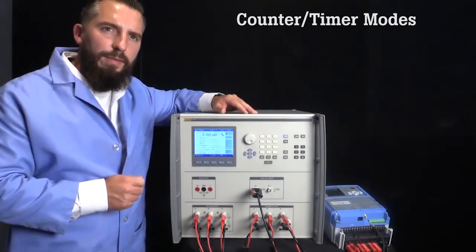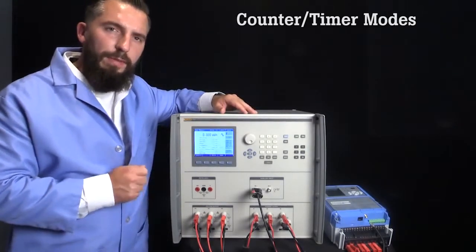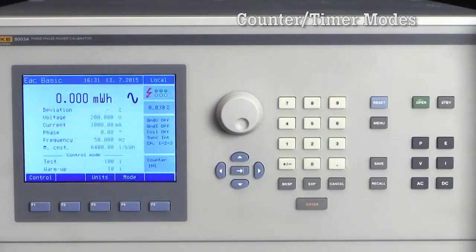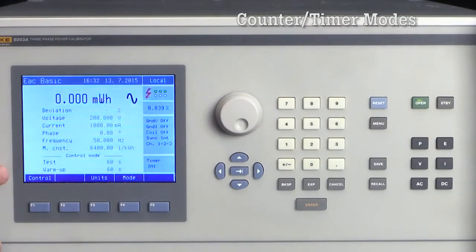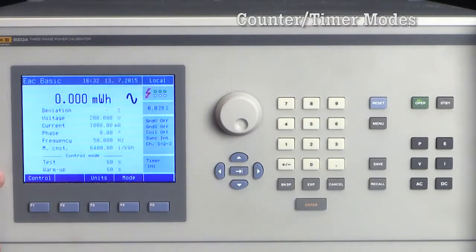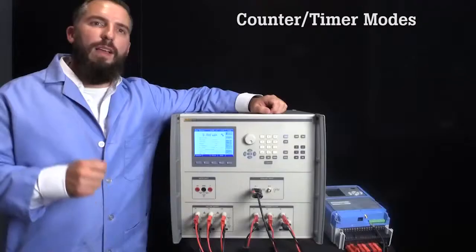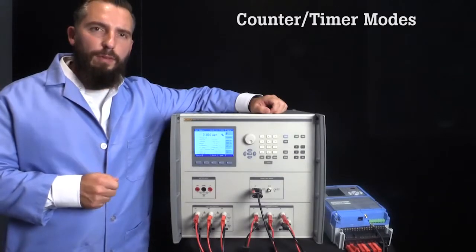To demonstrate, I've configured this test for 200 volts AC, 50 hertz, and 1 amp. If I use the counter mode, the 6003A lets you specify the warm-up pulses from the meter under test. If I were using the timer mode, I could set how many seconds I want the warm-up time in the test to run for, as I show here. For this demonstration, we will use the counter mode.